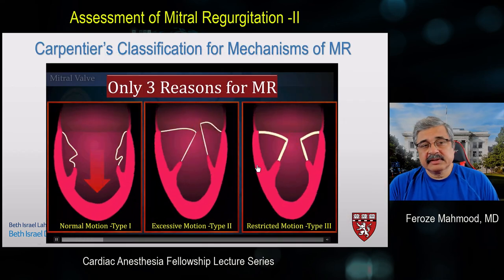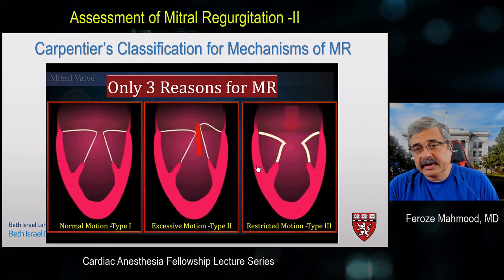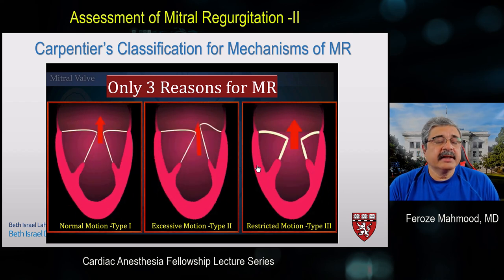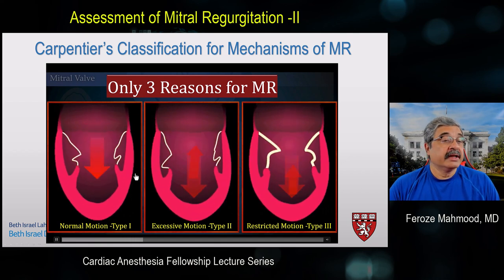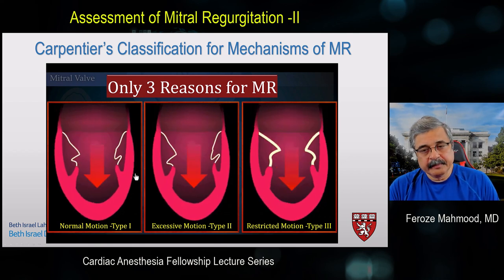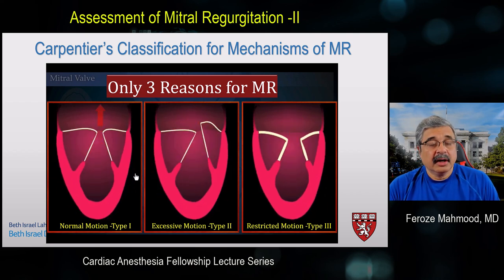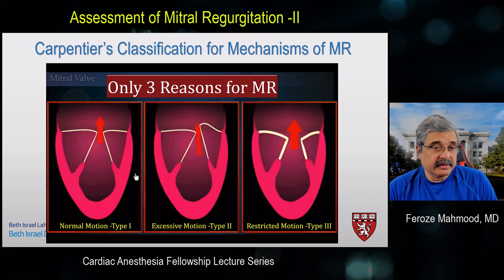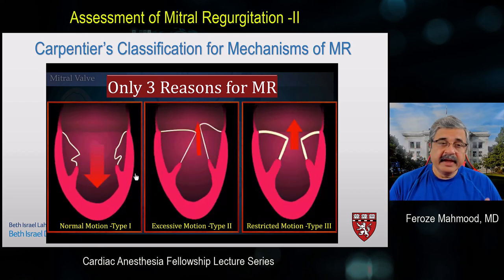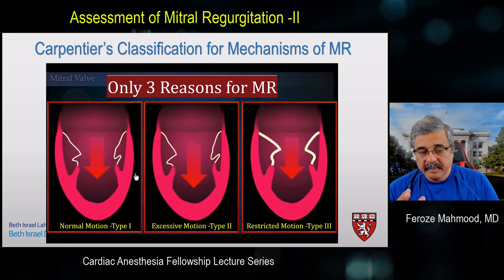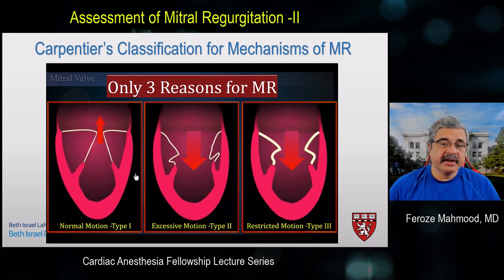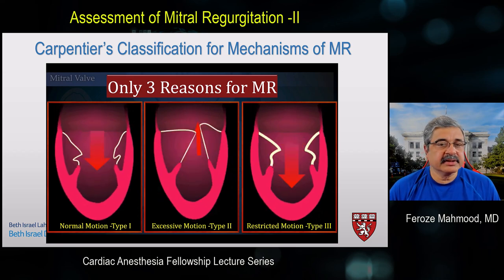For surgical classification, we use the Carpentier classification of mechanisms for MR, which states there are only three reasons the mitral valve can be regurgitant: Type 1 — moving normally with annular dilation or leaflet perforation; Type 2 — moving too much (excessive motion); and Type 3 — moving too little (restricted motion). Secondary MR qualifies for Type 1 or Type 3 dysfunction. This classification relates to the mechanism of MR, not the etiology, and numerous etiologies can produce each mechanism type.